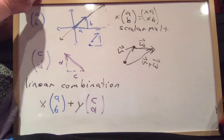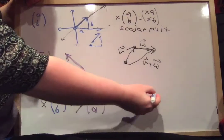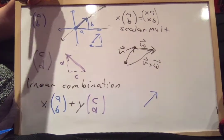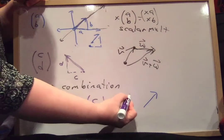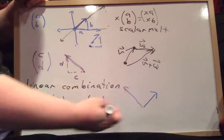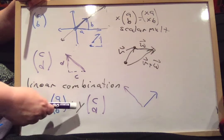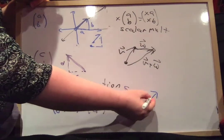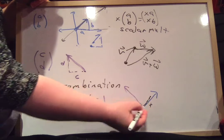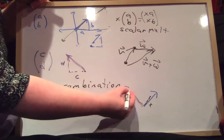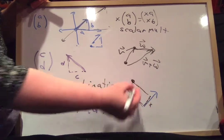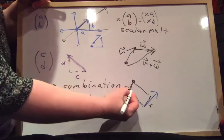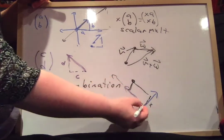What a linear combination does is it says: take x times the first vector plus y times the second vector. And what this does is it gives you, like, a new coordinate system. Suppose your (a, b) looks like I drew it above, and your (c, d) vector looks like I drew it above. This is saying: go x amount in the (a, b) direction plus y amount in the (c, d) direction. So you're going x amount in this direction, a distance x, and a y amount in this direction. Then you're following a parallelogram and getting to this point.